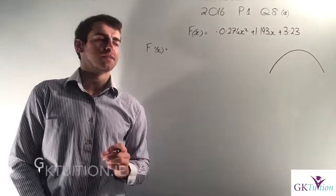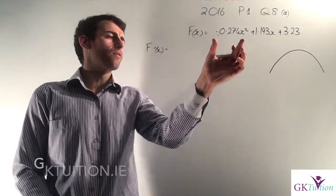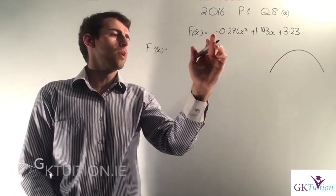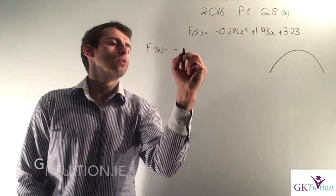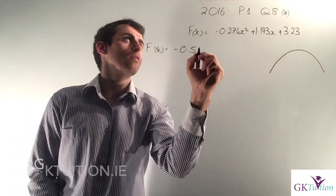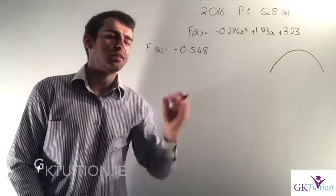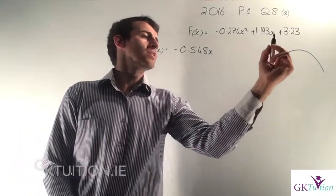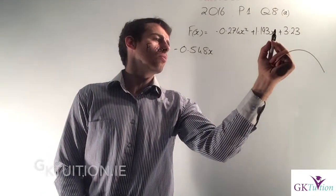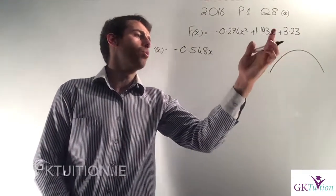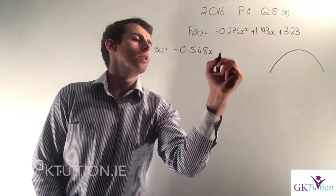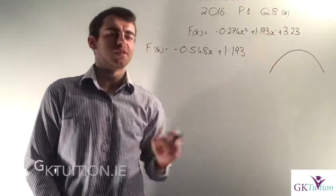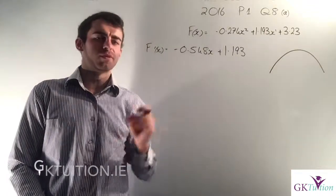So I want to find f'(x). To get the derivative of the first term I bring the power in front, so it's 2 multiplied by minus 0.274 which gives me minus 0.548, and I decrease the power of x by 1 so it becomes x to the power of 1. My second term is 1.193x to the power of 1 — bringing the power in front the derivative is just 1.193, and the power of x decreases by 1 so the x is gone. So my first derivative is this.